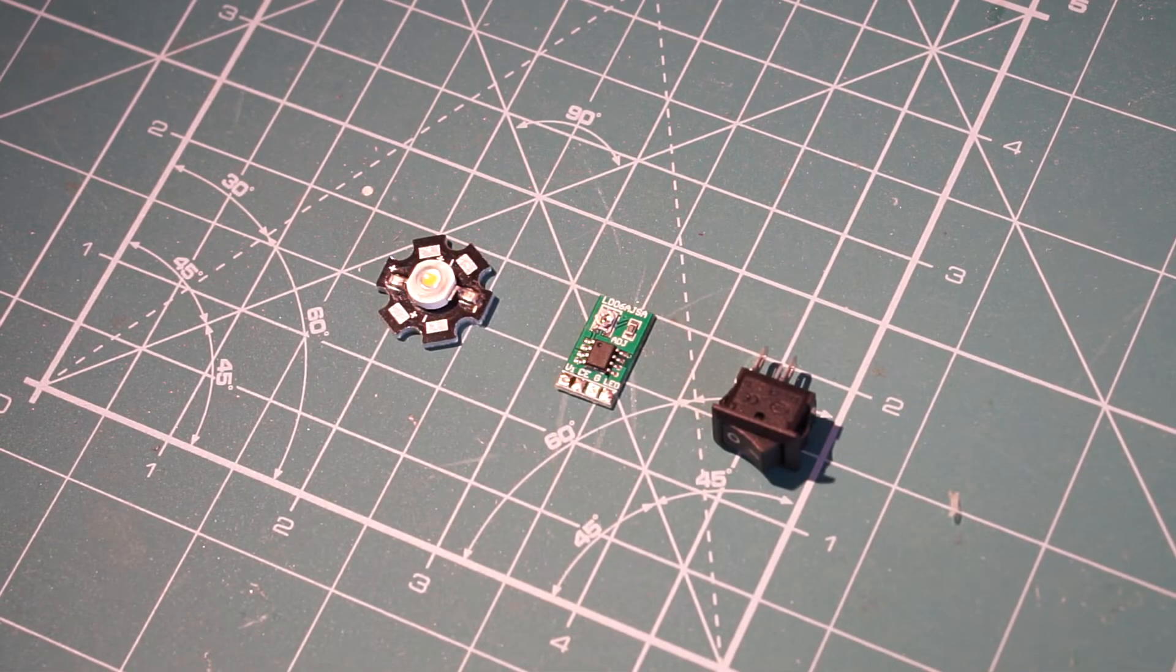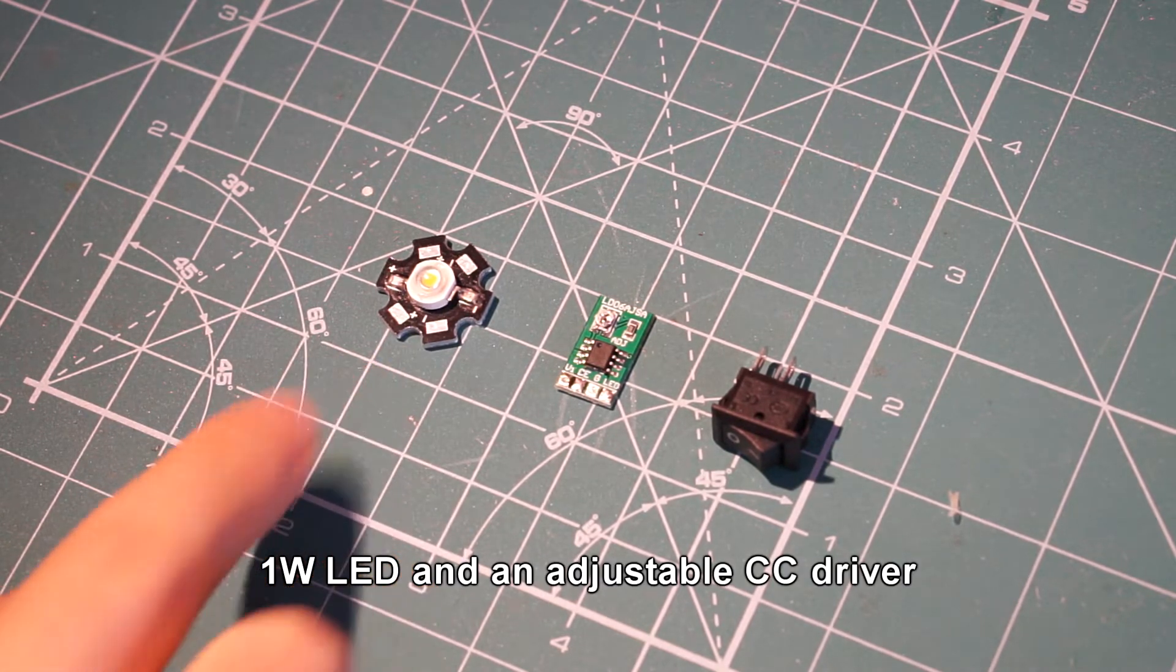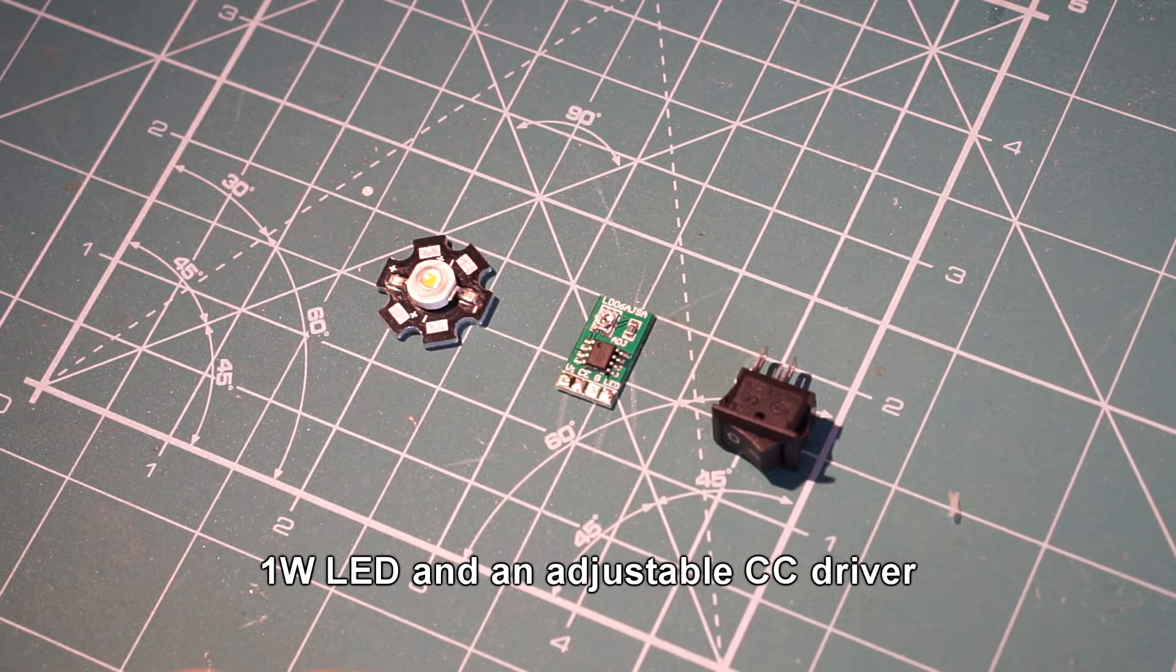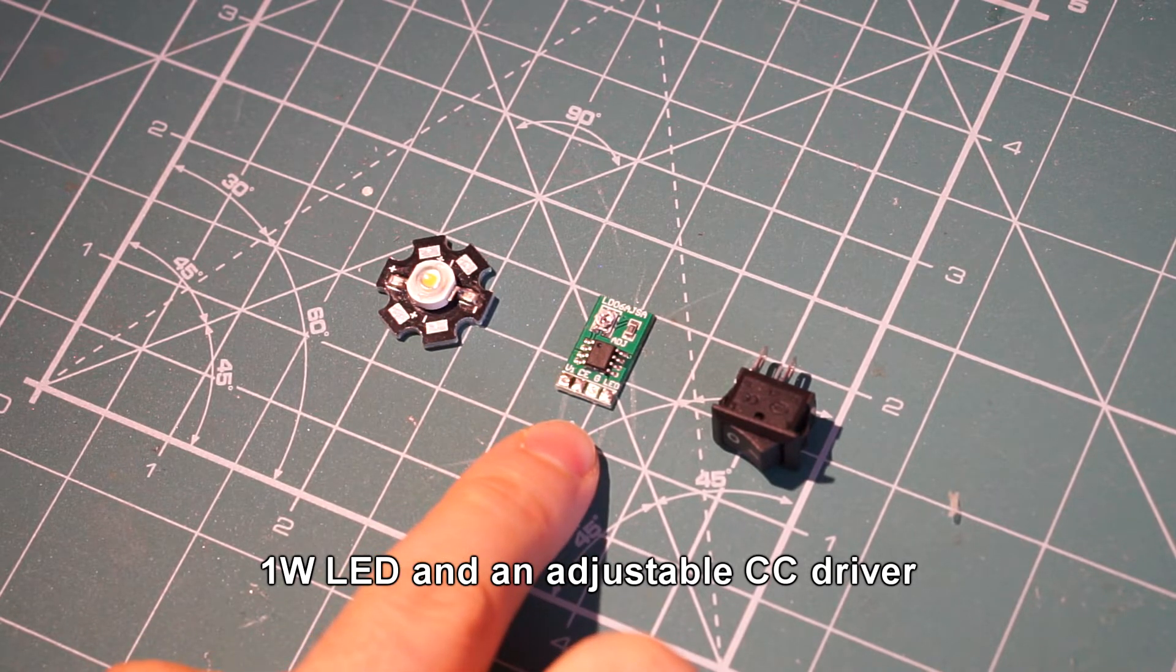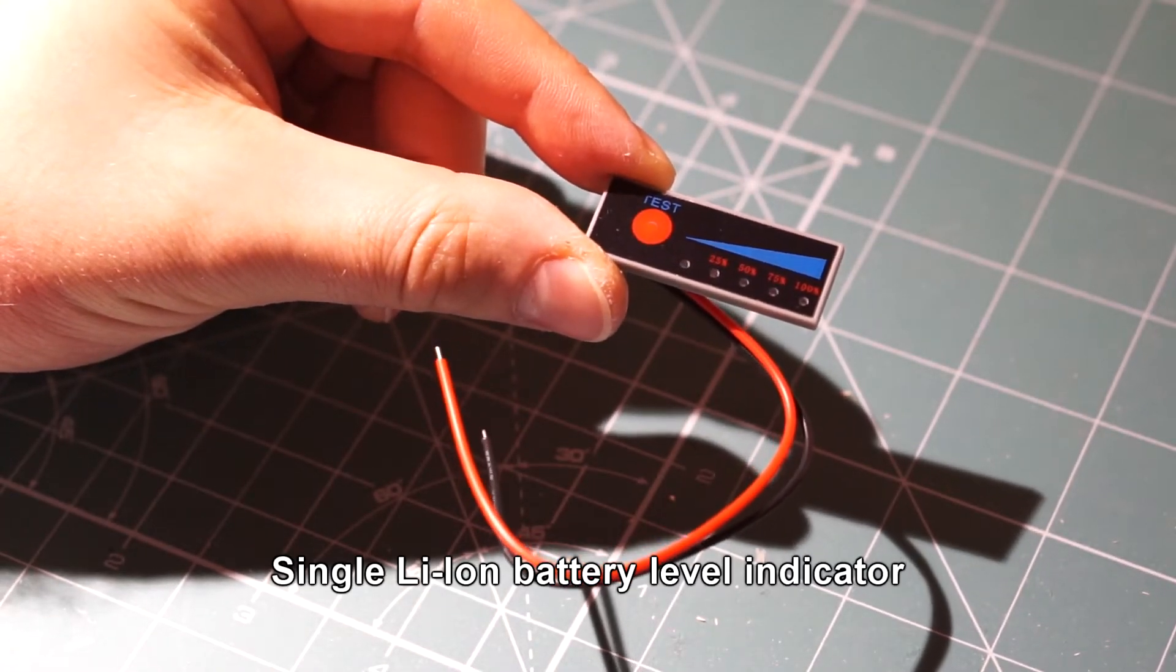For the flashlight, I am using a cheap but powerful LED which I got recently in a lucky bag from China. It is driven from a simple constant current driver set for about 1 watt of power. And this here is just a simple battery level meter.